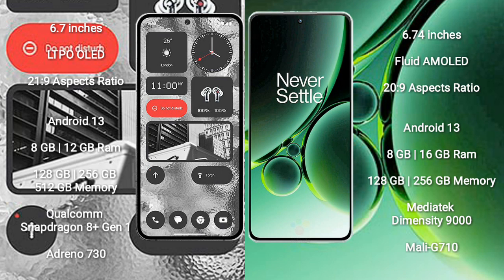Nothing Phone 2 storage options include 256GB and 512GB. It features the Qualcomm Snapdragon 8 Gen 1 processor with Adreno 730 GPU.